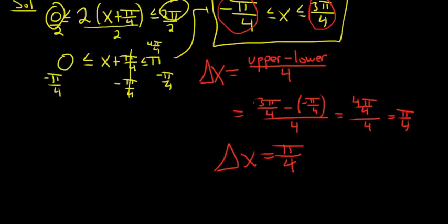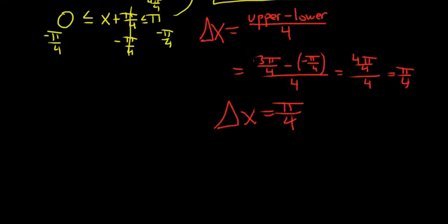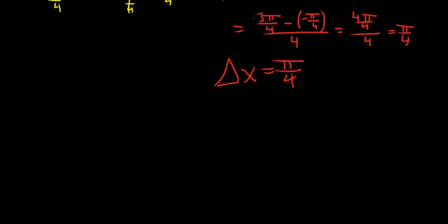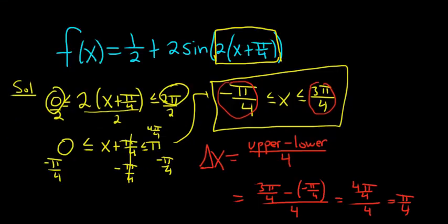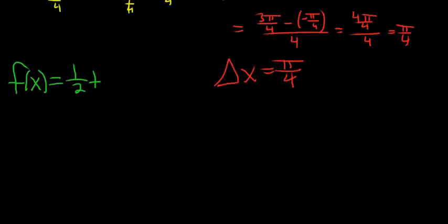Let me scroll down and rewrite the function because we lost track of it. So f(x) is our original function, and it's 1/2 plus 2 sine of 2x plus π/4. That's it there.